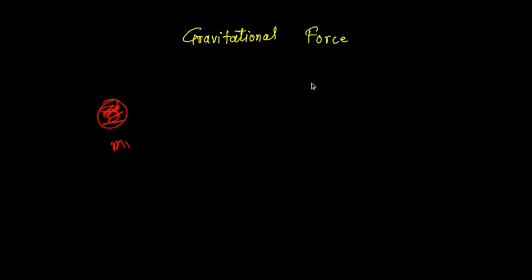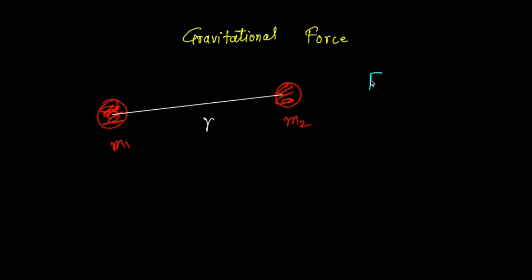Suppose we have another object with mass m2, and the distance between them is r. The gravitational force of attraction between these two is given by the formula F equals G times m1 times m2 over r squared. G is the universal gravitational constant.